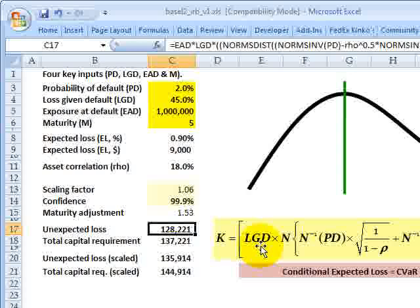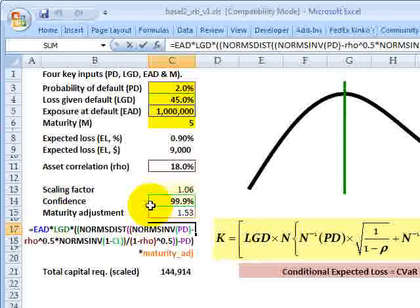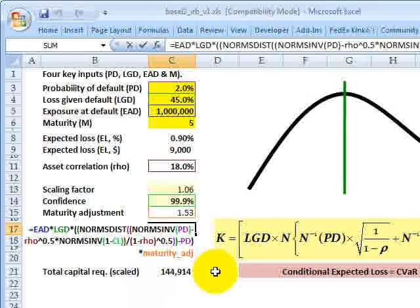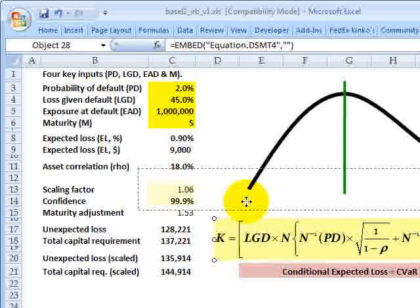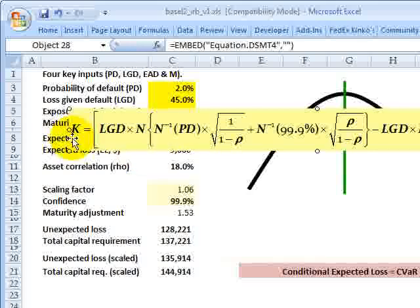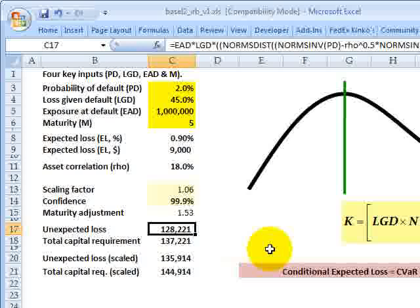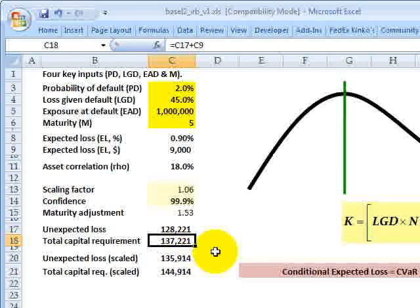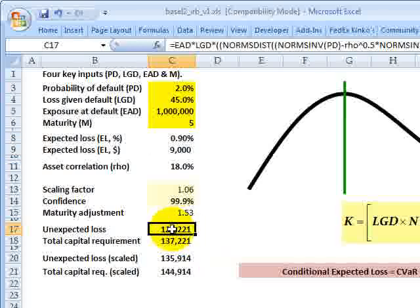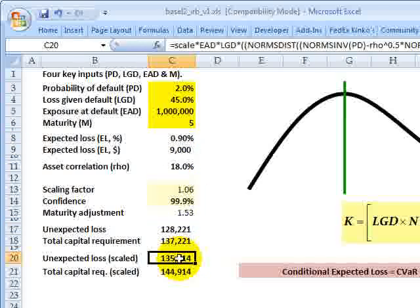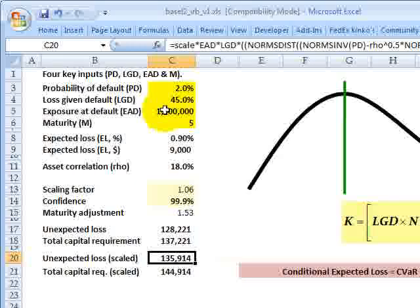And here's the unexpected loss calculation. So right here in this formula, it's quite a bit of detail, but it's just the implementation of this formula here that I just reviewed. You can find that right in this cell, C17, and then a total capital requirement that adds the unexpected loss to the expected loss. So that's a general overview of the IRB risk weight function. This is David Harper of Bionic Turtle. Thanks for your time.